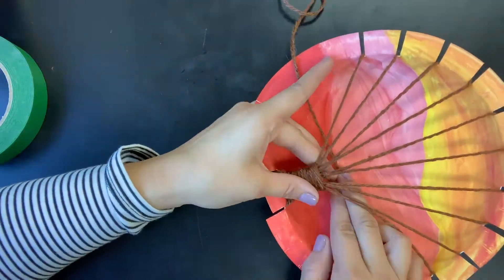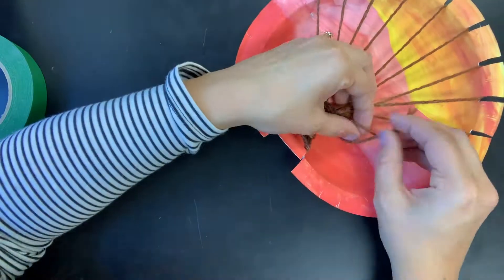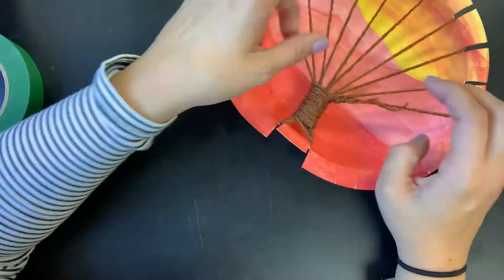Just before you run out of string, you'll need to tie the end onto one of your branches. Make a loop, put your string through, and pull. Then you're ready to do the leaves.